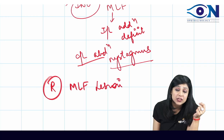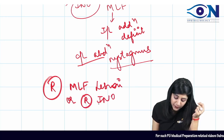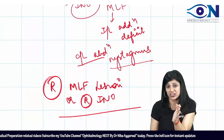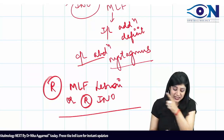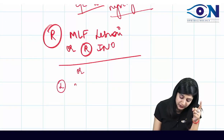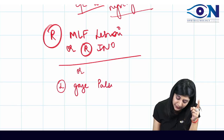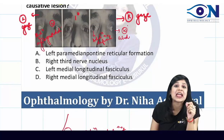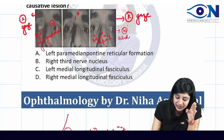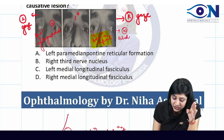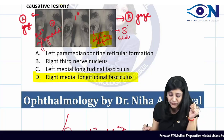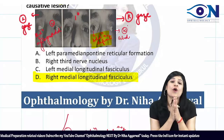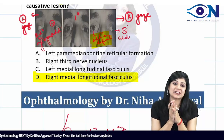It can be called a right MLF lesion or right INO. If the patient is having a right MLF lesion, he will not be able to adduct — so there is a right adduction deficit, meaning he will not be able to look in the left gaze. So this will be your left gaze palsy. The question is actually quite simple — they are asking which side MLF lesion. Since we have a right adduction deficit, it is the right MLF lesion.